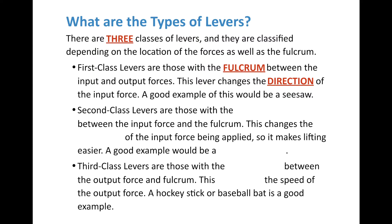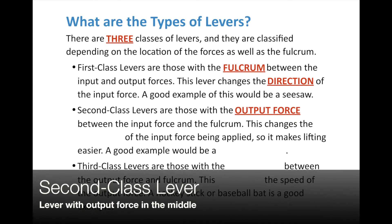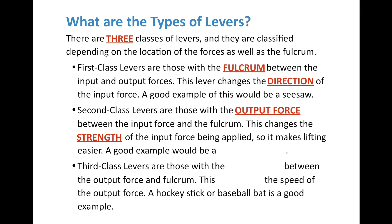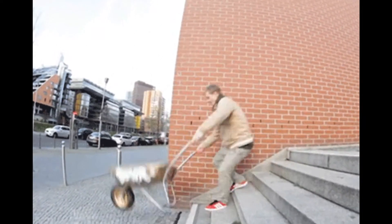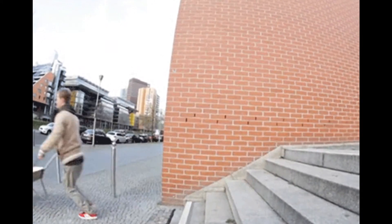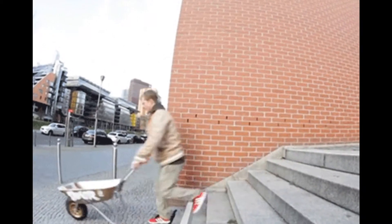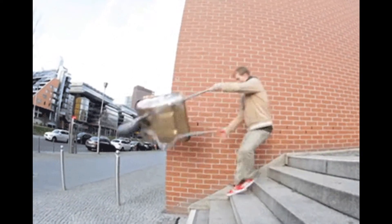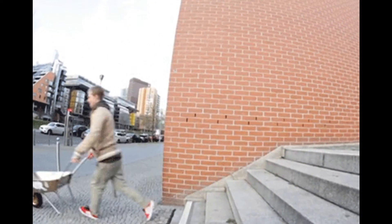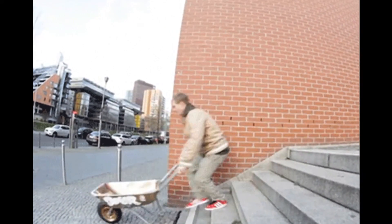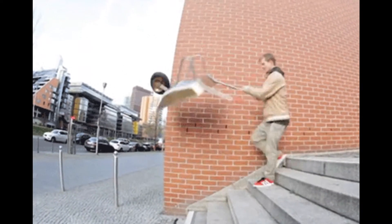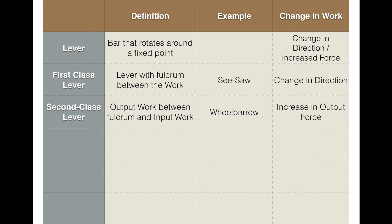Second class levers have the output force between the input force and the fulcrum. This changes the strength of the input force being applied — in other words, you don't have to apply as much input force in order to lift the device up, so it makes lifting easier. A good example is a wheelbarrow. The basket is where you put the load, the fulcrum is the wheel itself — that's what the wheelbarrow pivots on — and the input force is the person lifting. Because it's further away from the fulcrum and the output is in the middle, it makes lifting easier.